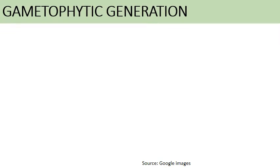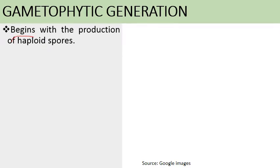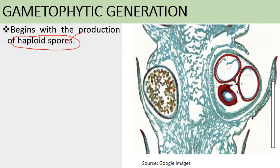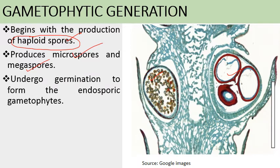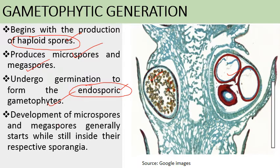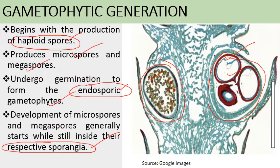Next comes the gametophytic generation, which starts with the production of spores. It begins with the production of haploid spores — microspores and megaspores — whose germination gives rise to the respective gametophytes. The spores undergo germination to form the endosporic gametophyte, meaning the gametophyte is formed within the spores. Development of the microspore and megaspore generally starts while still inside their respective sporangia, before their release.